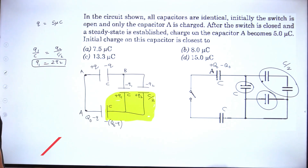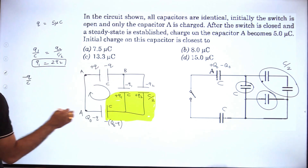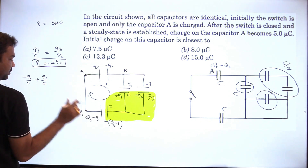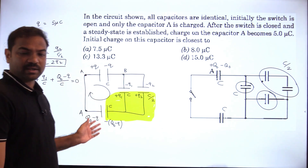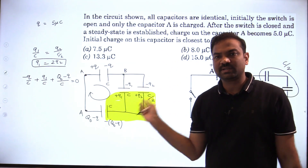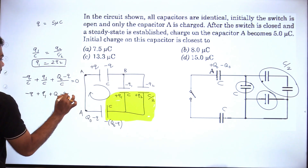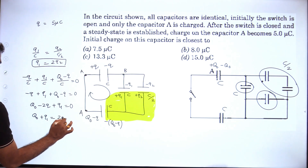We need to find q₀. I have the q₁ and q₂ relation, and I can relate q₁ and q₀, q₂ and q₀. Applying Kirchhoff's loop principle in this circuit: -q/c + q₁/c + (q₀ - q)/c = 0, since there is no battery. So: -q + q₁ + q₀ - q = 0, giving q₀ - 2q + q₁ = 0, therefore q₀ + q₁ = 2q = 10 μC.